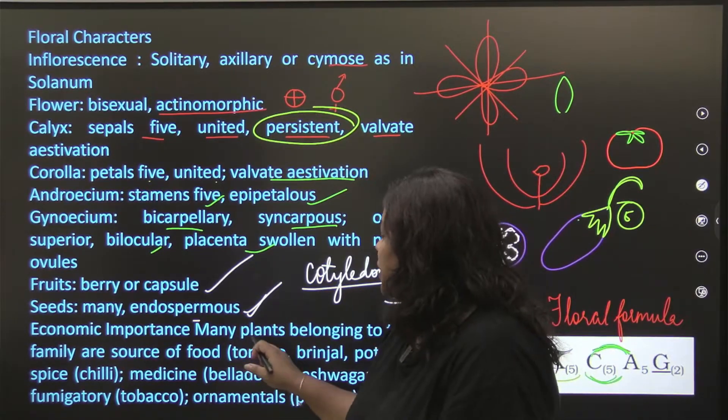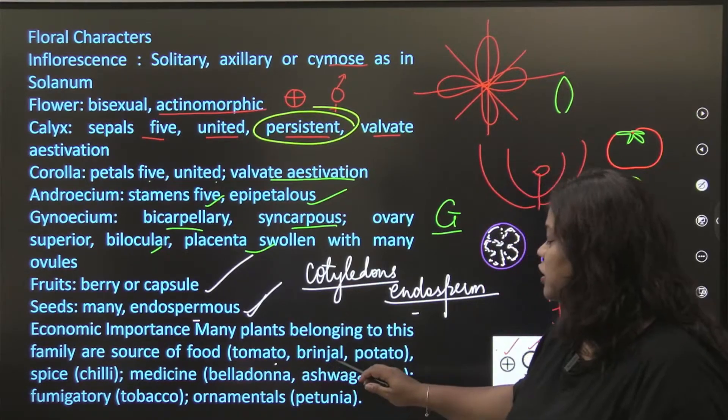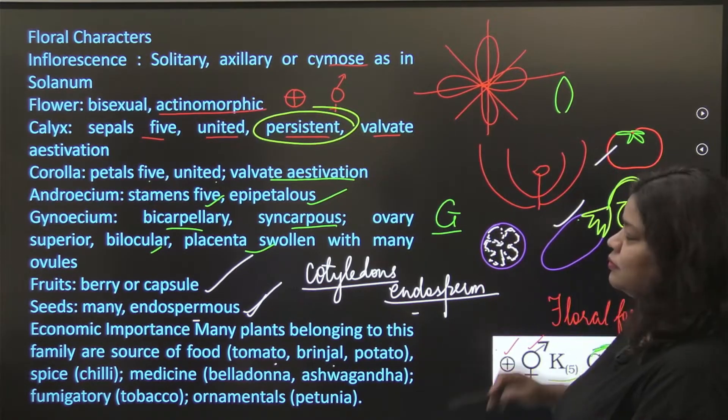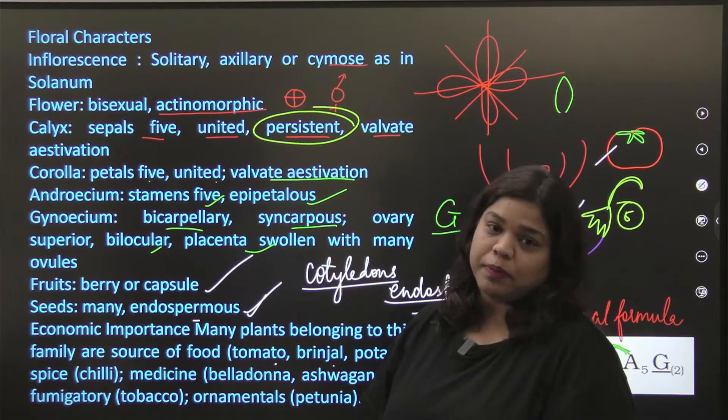Economic importance. Many plants belonging to this family are source of food: tomato, brinjal, potato. Spices: chilli, mirch.